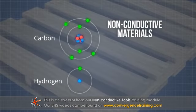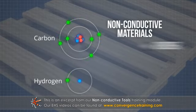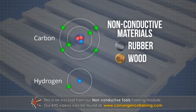Non-conductive materials are generally compounds containing carbon and hydrogen. These include rubber, wood and plastics.